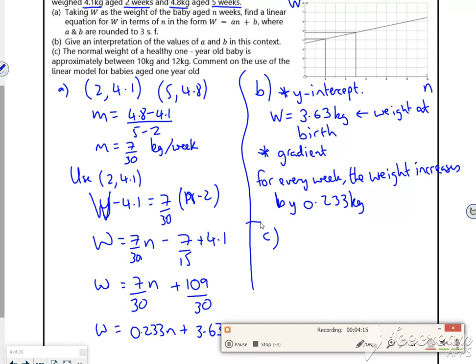Part C says the normal weight of a healthy one year old is between 10 and 12. Right. So I've got 40 seconds left. I'm just going to sub in. What are we on? For a one year old. So 52. I'm going to sub in. X is 52. Or N is 52. See what I get out and see if it works or not. I'm just going to pause it while I do that.